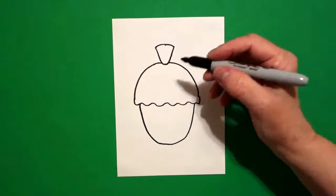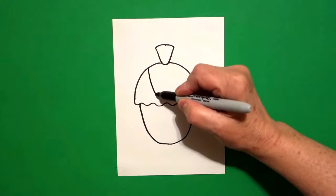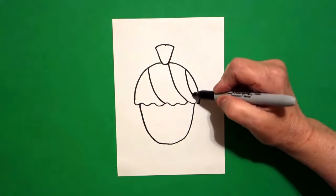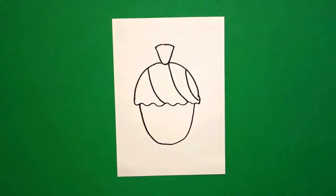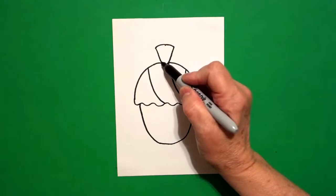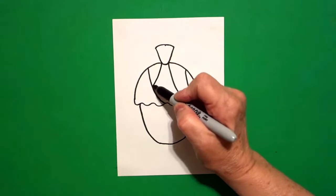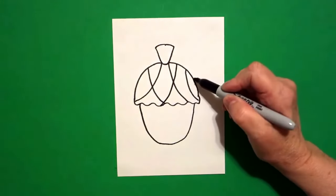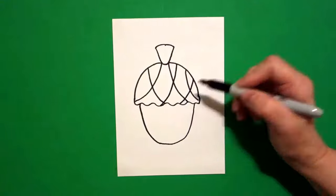Now come up to the top part and draw one, two, three curve lines. Now we're going to cross those lines with more curve lines going towards the left. Draw one curve line, two curve lines, three curve lines.